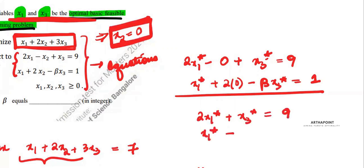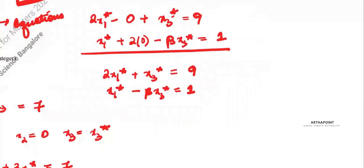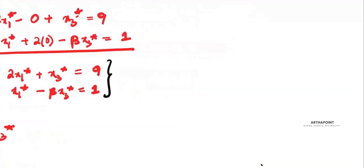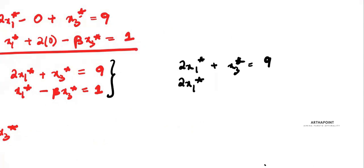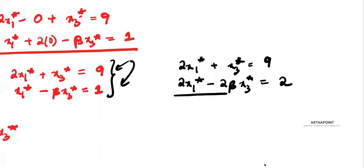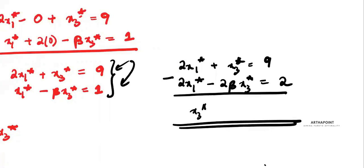From these two equations — 2x1 star plus x3 star equals 9, and x1 star minus beta x3 star equals 1 — I solve by elimination. Multiplying the second equation by 2 gives 2x1 star minus 2 beta x3 star equals 2. Subtracting from the first equation gives x3 star plus 2 beta x3 star equals 7.